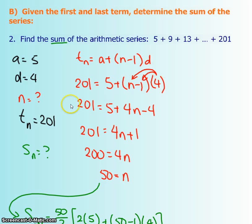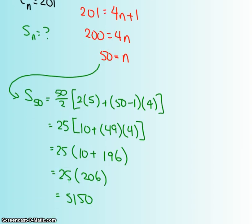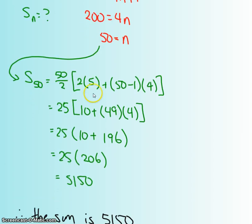That last term is your tn, so I wrote that right here. If I have my tn, my a, and my d, I'm going to use the tn formula, and that's going to help me find out what n is. I'm going to sub the last term into tn, 5 into a, and 4 into d. My only unknown is n, so I'm going to solve, and it looks like n is 50 — which means this is the 50th term. Now that I have 50 terms, I'm going to plug everything into the sum formula. My a is still 5, my d is still 4, and now I know what n is. Solving gives a sum of 5,150 once I add all those 50 terms up.